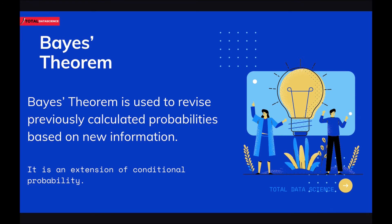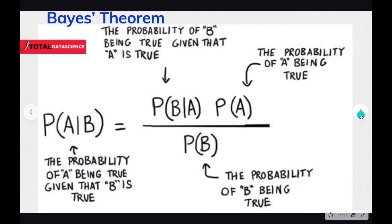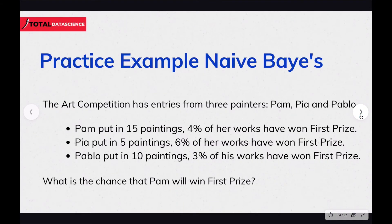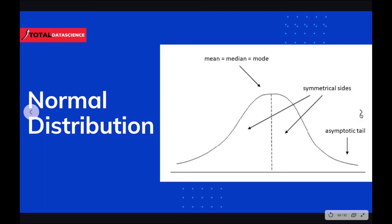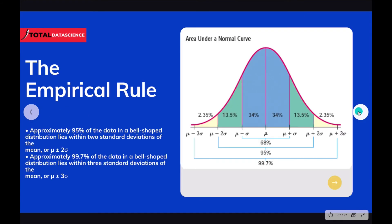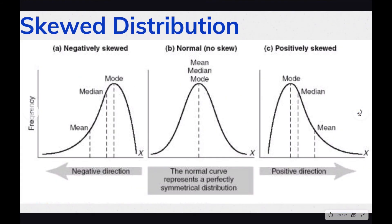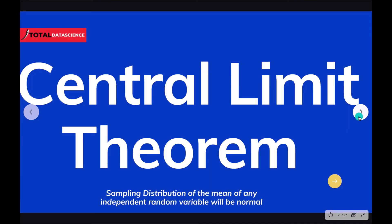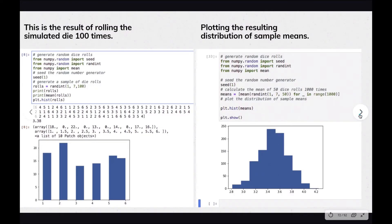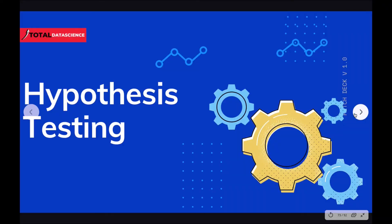We'll cover Bayes' theorem, which is the basis of the Naive Bayes algorithm you'll encounter in the machine learning class. Normal distribution is also an important concept to know, along with the empirical rule and skewness in your data — all essential for exploratory data analysis. The central limit theorem is another concept you'll really need, and we'll look at that with examples.